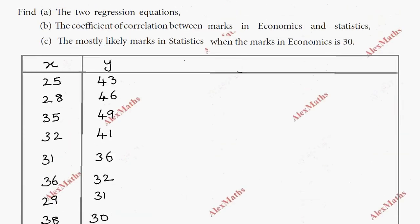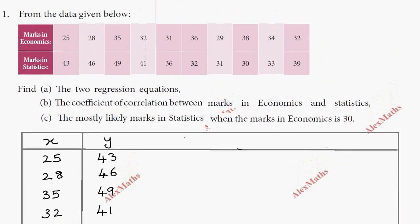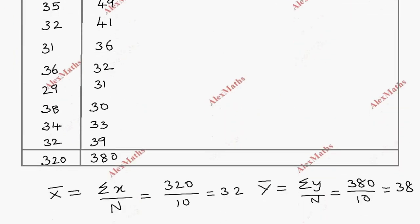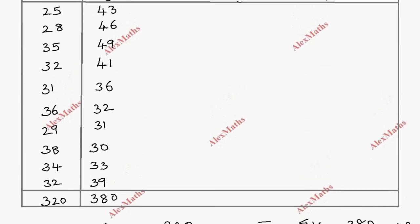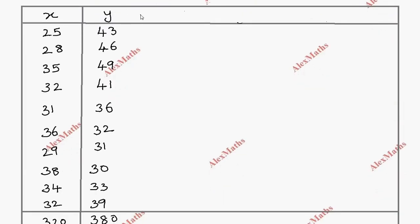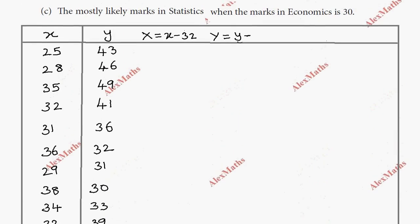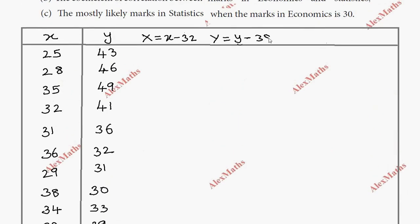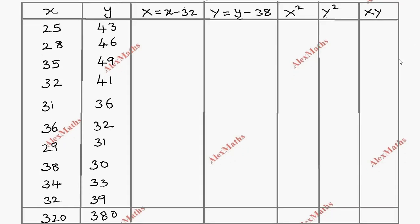Now for the deviation table. We define capital X as x minus x̄, which is x minus 32, and capital Y as y minus ȳ, which is y minus 38. We will calculate columns for X², Y², and X·Y.